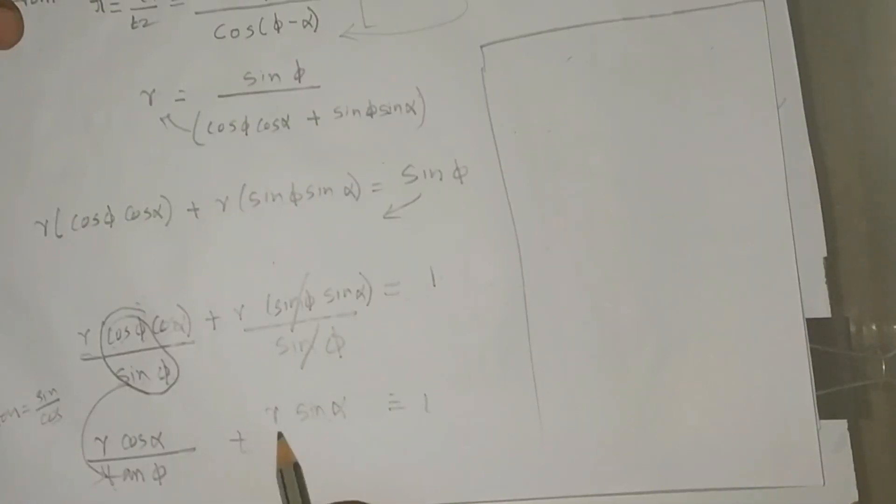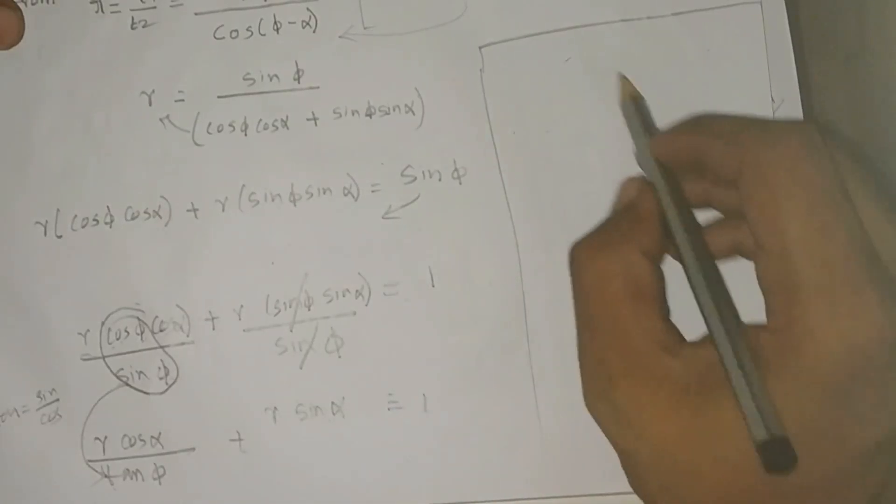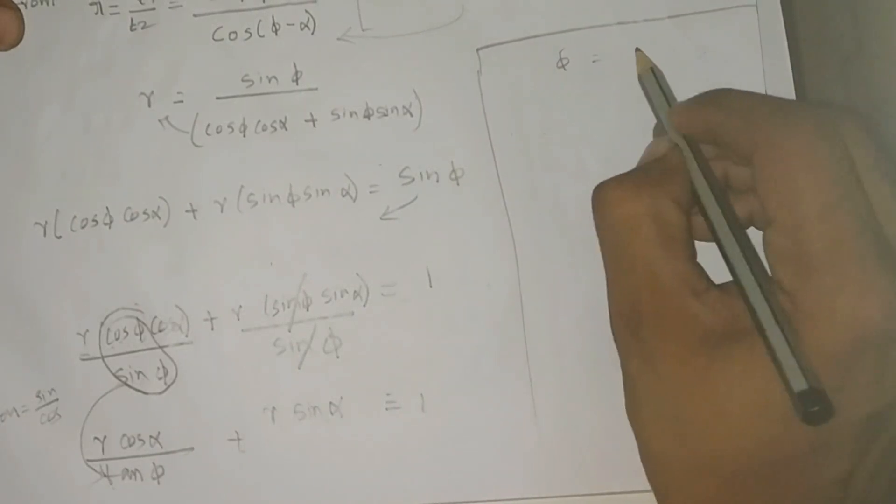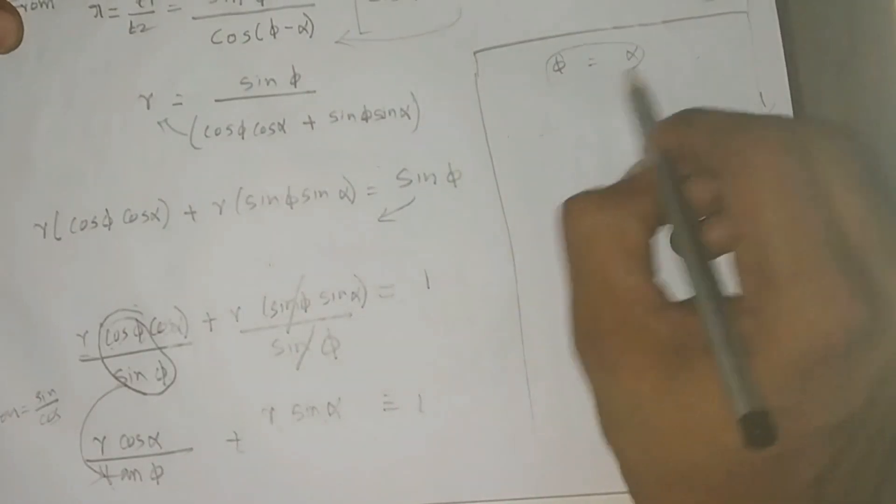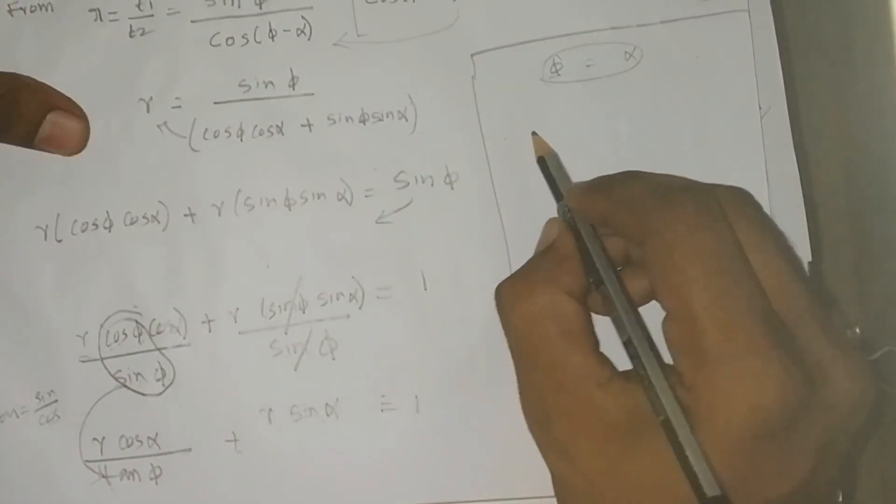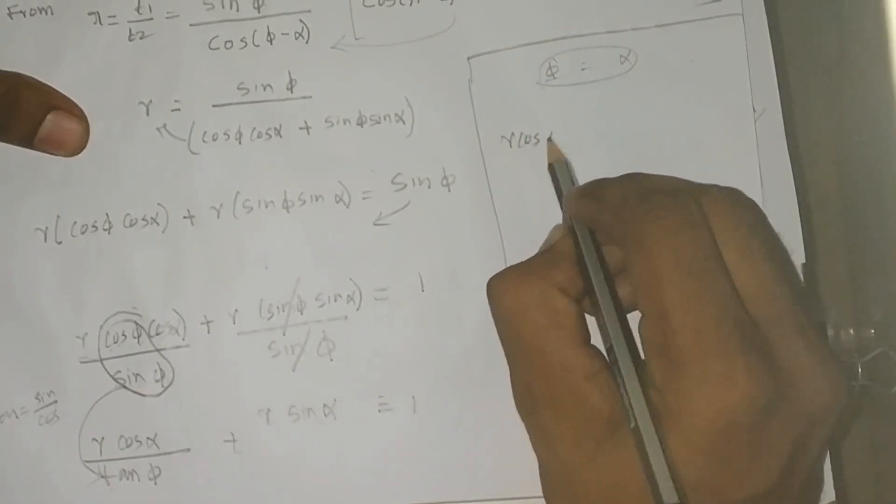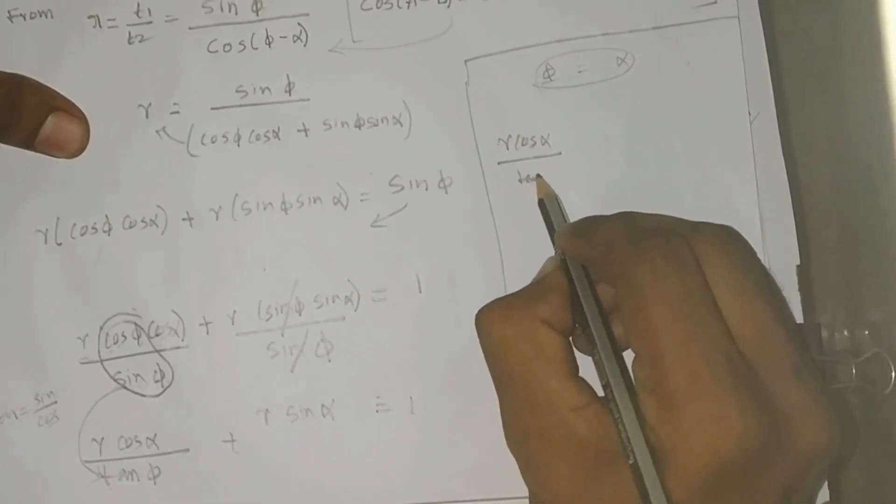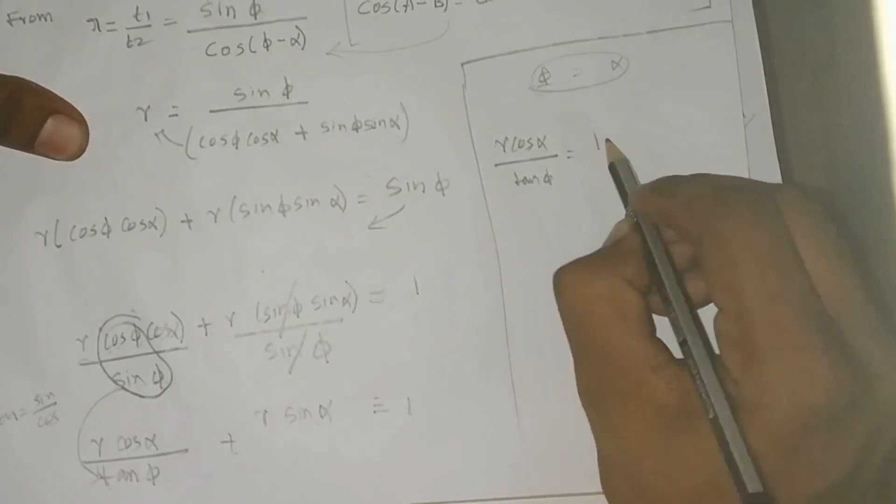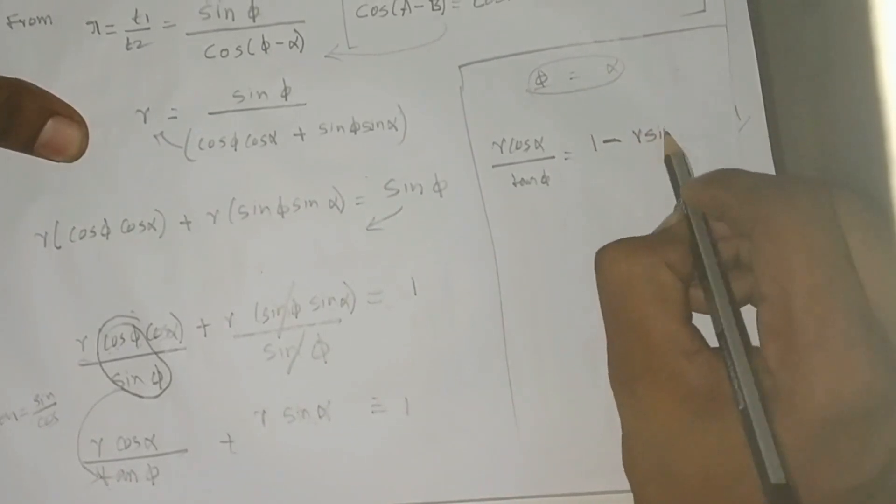Now I am going to rearrange the equation, putting φ on the left side and α on the right side. See here: r cos α / tan φ = 1 - r sin α.